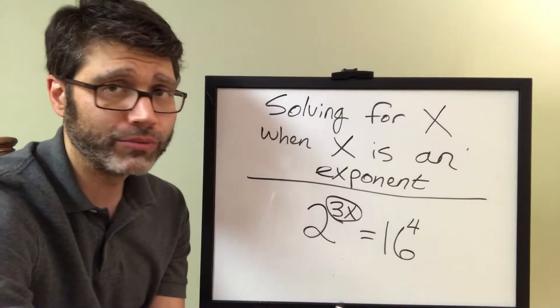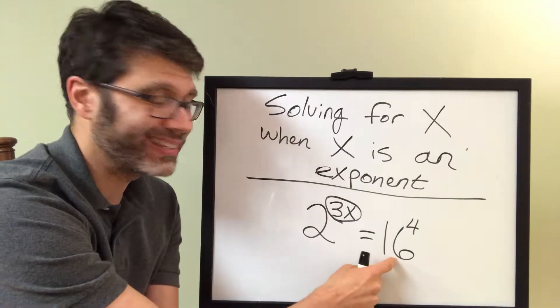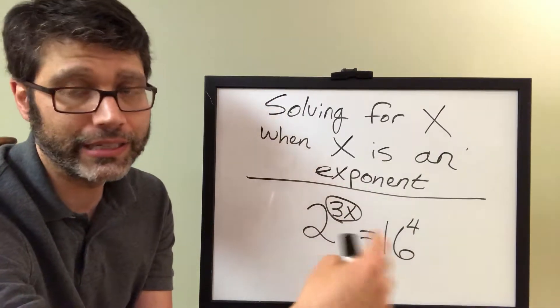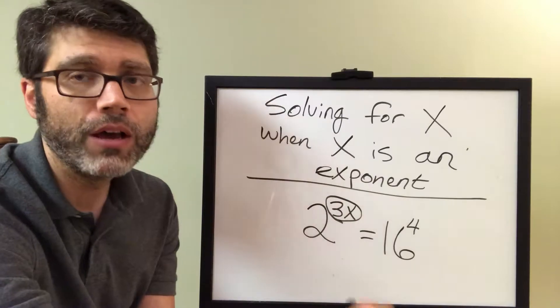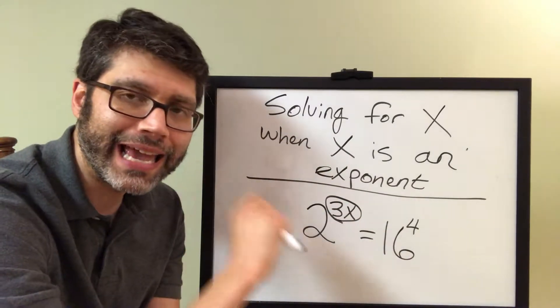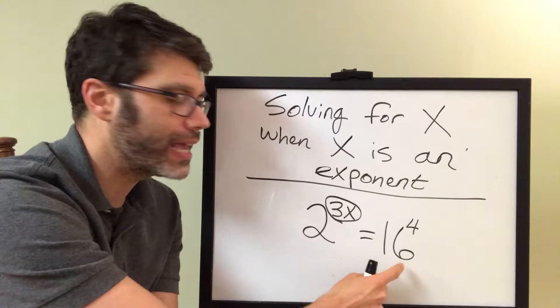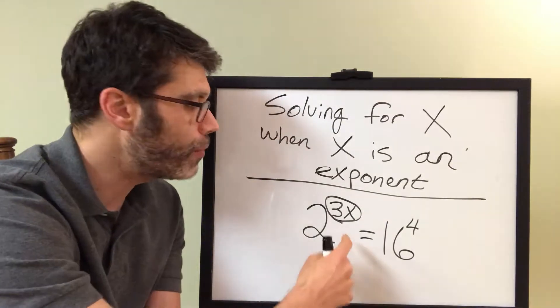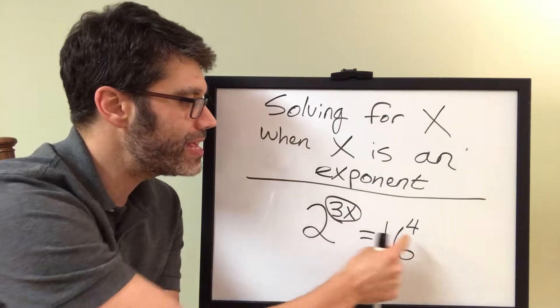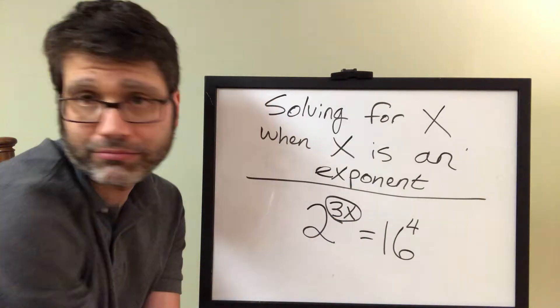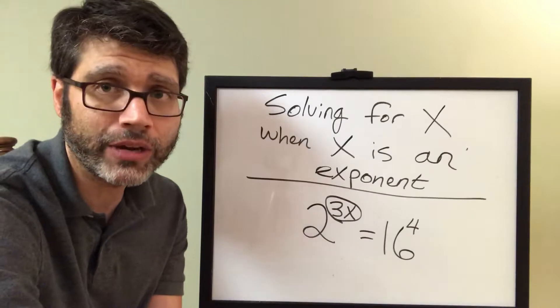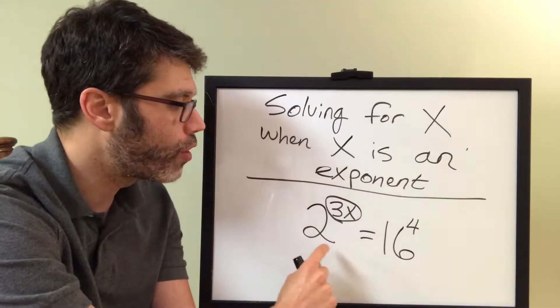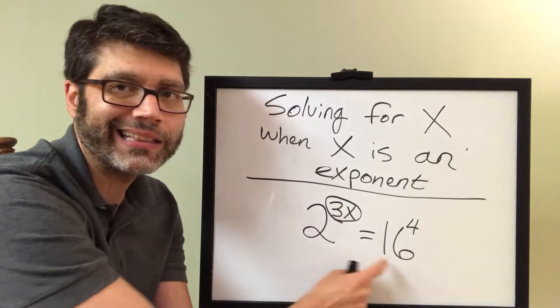So again, resist the temptation of multiplying 16 times itself 4 times. I have no idea what it is. It's some enormous number, and it's not going to help us out in this case. What we want to do is get both of these to be the same base, because if both of these are the same base, all we got to do is then set the exponents equal to each other, and then we can just solve and isolate x. So what we need to do in this case is think of what base I could get these both to.